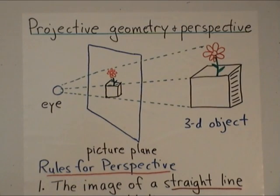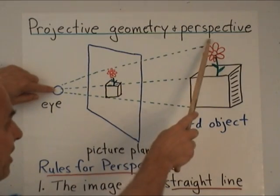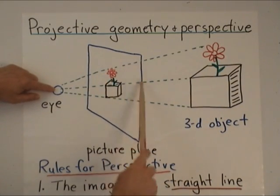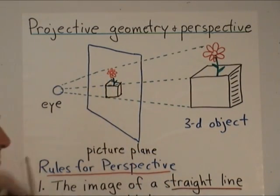Mathematically, what that means is that we draw lines from the eye to the various points on the object and when those lines intersect our picture plane, we draw the corresponding points.